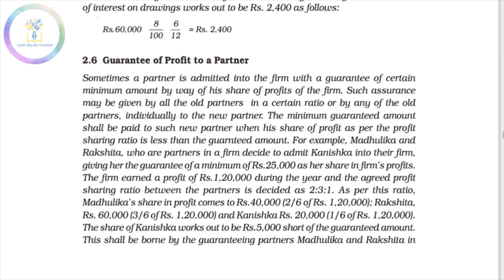The amount of profit is guaranteed for a partner. The minimum guaranteed amount shall be paid to such new partner when his share of profit as per the profit-sharing ratio is less than the guaranteed amount. For example, if the profit share is 25,000 for the new partner but the guarantee is 30,000, there is a deficiency of 5,000. That is the guarantee of profit to the new partner.